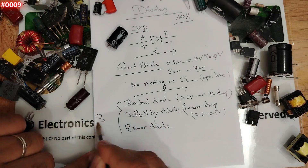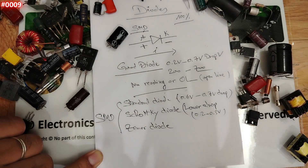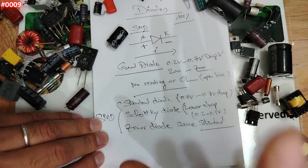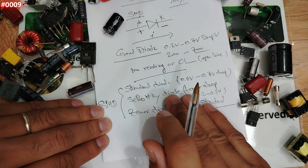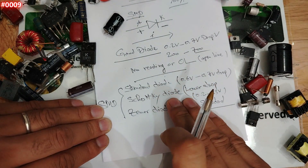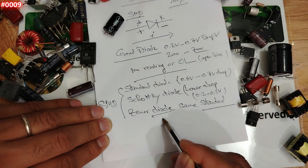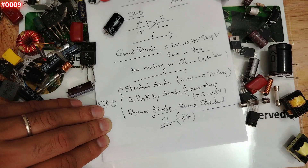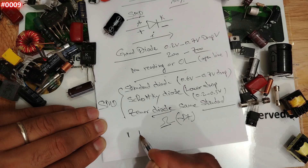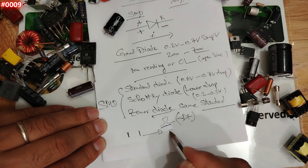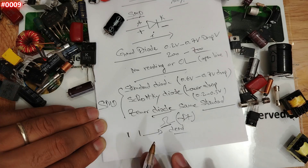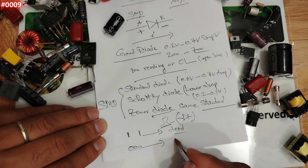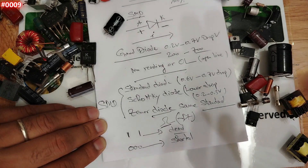For a Zener diode, the working principle is the same as a standard diode. There are some mistakes you must pay attention to: testing diodes in-circuit can give wrong results due to parallel paths, and testing diodes in resistance or continuity mode rather than diode mode can also cause errors. Finally, if you test a diode in both directions and get no reading at all, the diode is dead. If you get a short or very low reading in one or both directions, the diode is shorted.